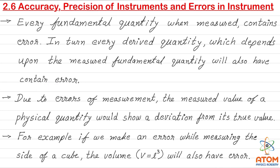All seven fundamental quantities, or base quantities, are measurable — they are variables, not constants. All derived quantities are based on fundamental quantities, so if there is any error in a fundamental quantity, obviously there will be errors in the derived quantity also.